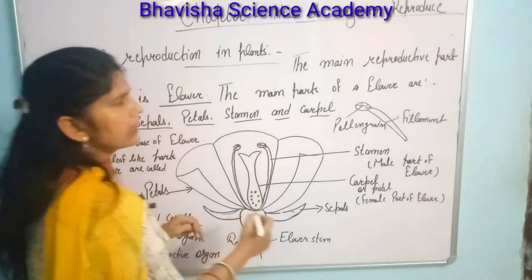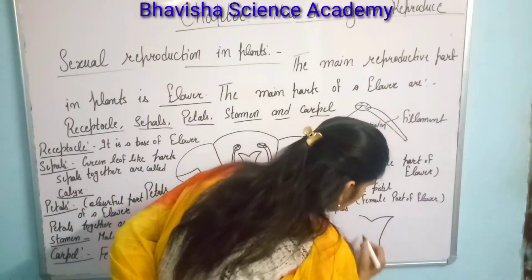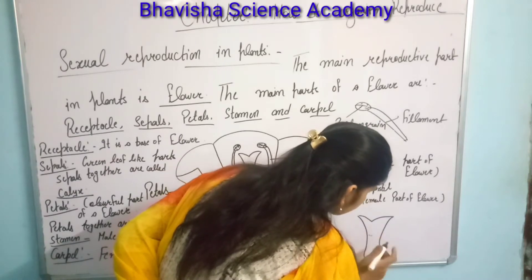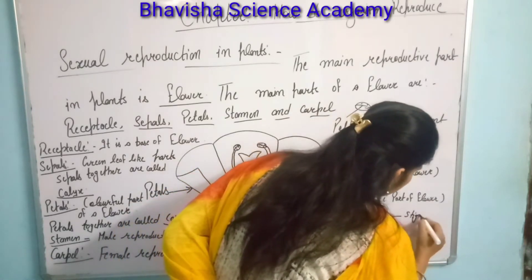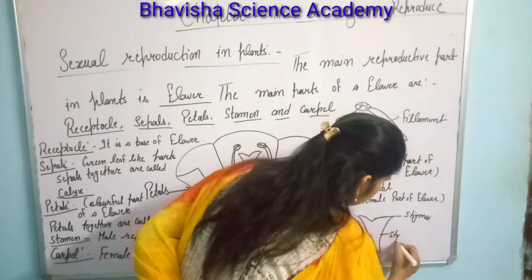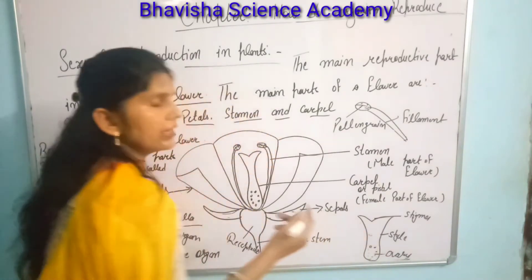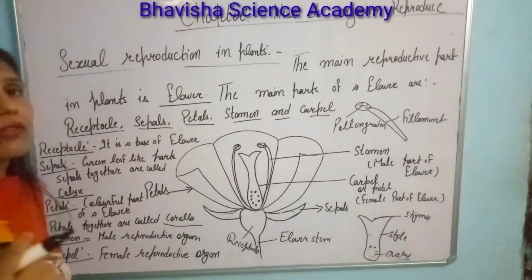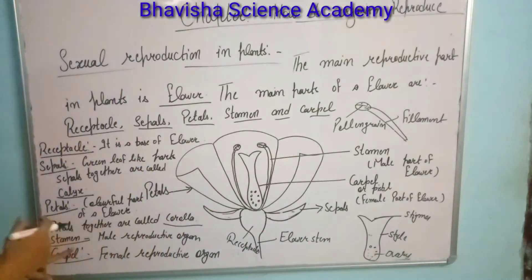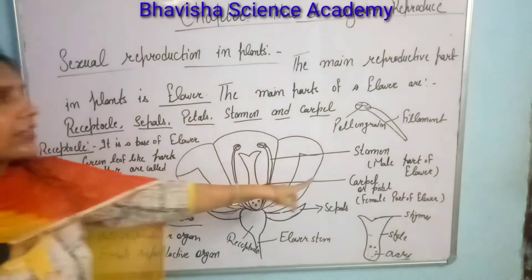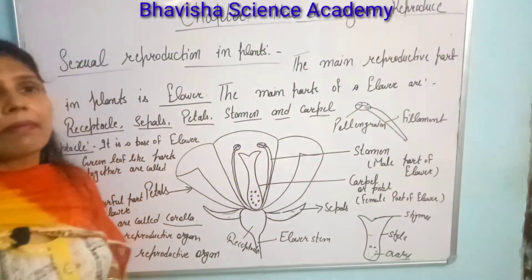The carpel is the female reproductive part at the center of the flower. It contains small ovules and is mainly divided into three parts: stigma, style, and ovary. The ovary contains small ovules, which are the female gametes — also known as ova. The stamen has two parts: filament and pollen grains, which are the male gametes.